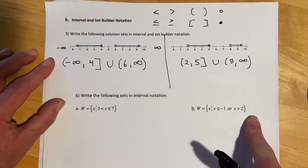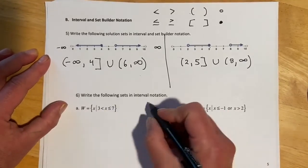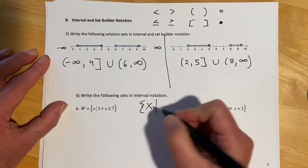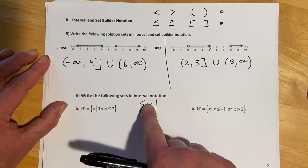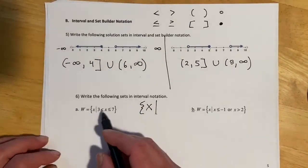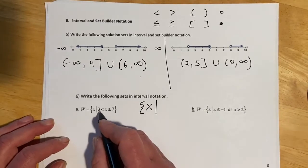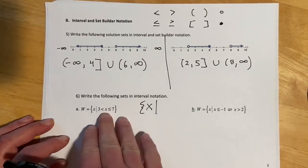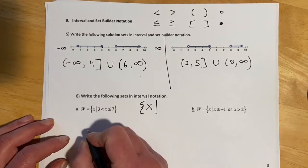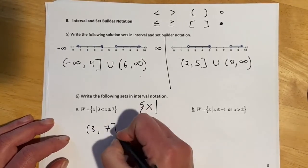Down here we have a few in set builder notation. These are a lot like inequality notation, except they have this fancy thing at the front that reads 'the set of X such that.' So this one reads: the set of X such that 3 is less than X, which is less than or equal to 7. That means X is between 3 and 7.